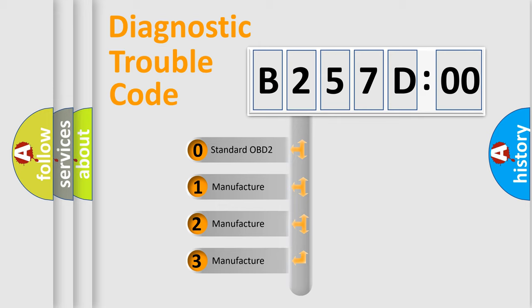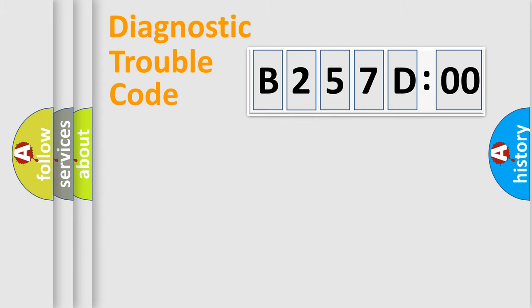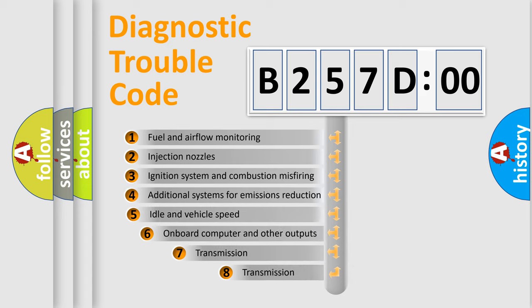If the second character is expressed as zero, it is a standardized error. In the case of numbers 1, 2, or 3, it is a more precise expression of the car-specific error.